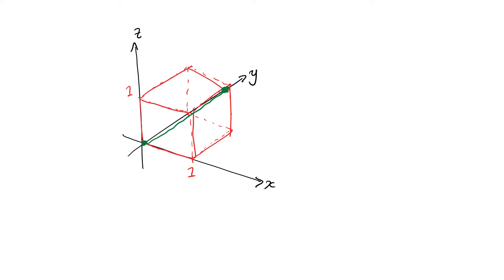We want the angle between this diagonal line and the bottom face of the cube. If we draw another line along the bottom, the angle we're actually looking for is this one. Now, these things can just be set up as vectors. The vector on the bottom is going to be 1 in the x, 1 in the y, and 0 in the z. And the diagonal vector is going to be 1 in the x, 1 in the y, and 1 in the z. So we're just trying to find the angle between those two vectors.